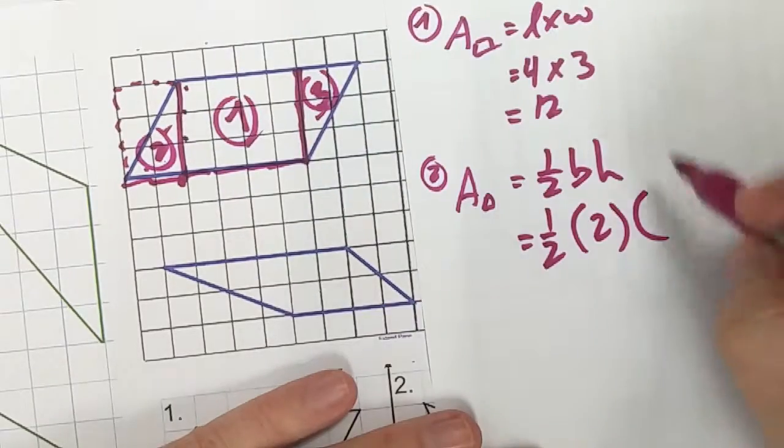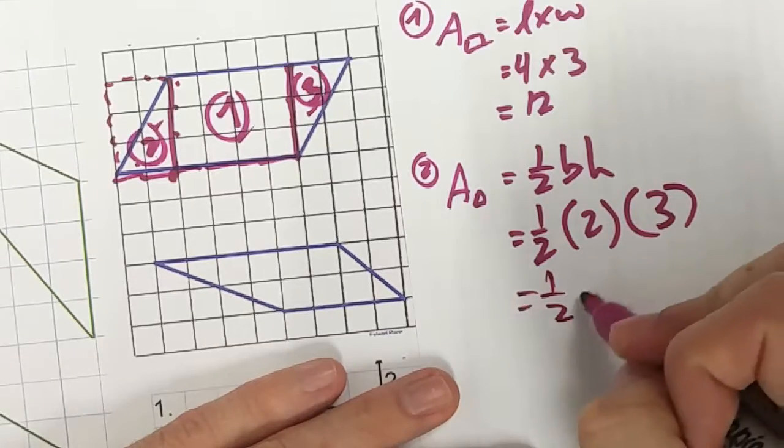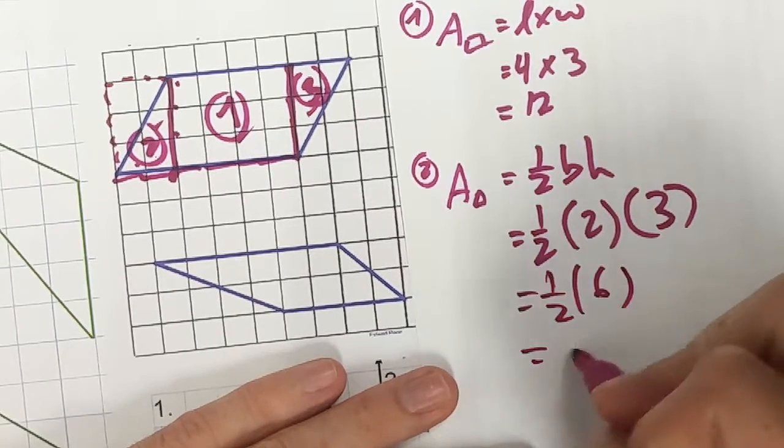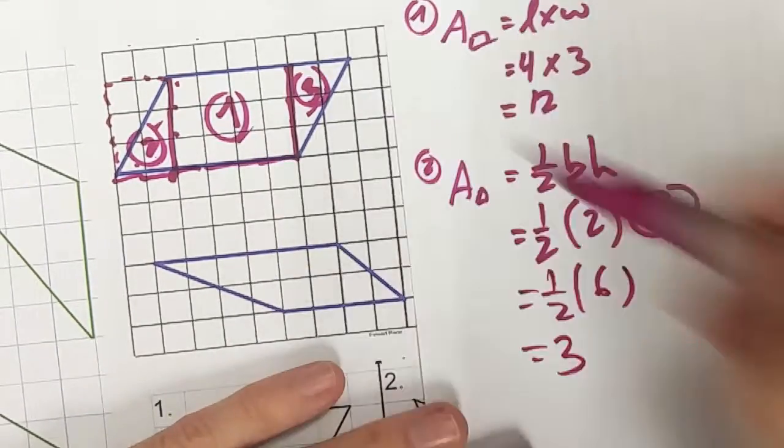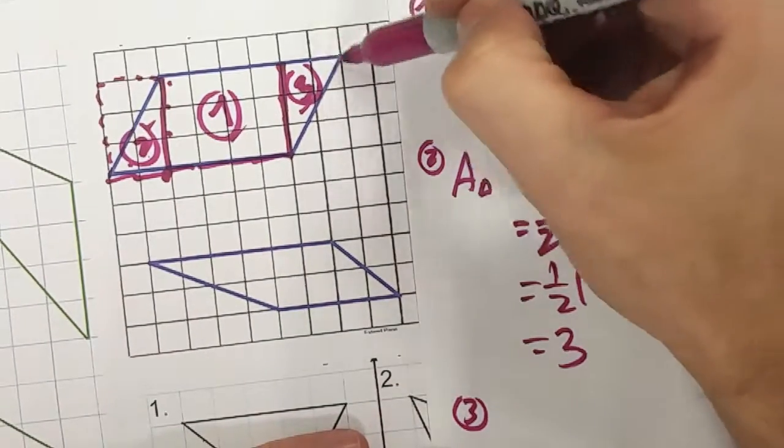Half of two and three, okay, I multiply those together, I have half of six and half of six is three. And let's do the third shape here, this last shape.